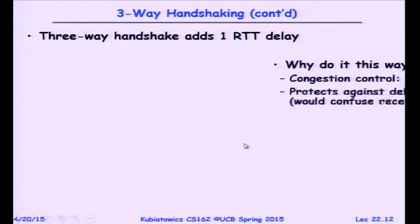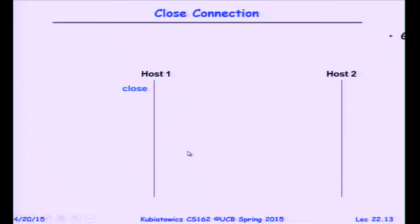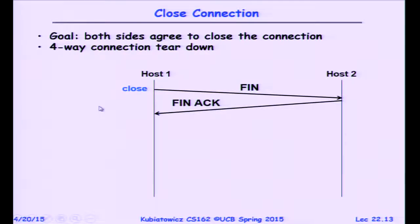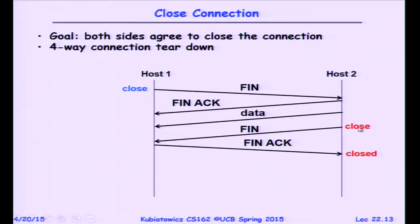The three-way handshake adds a round-trip delay, but it acts as a cheap probe and protects against delayed packets from other connections. Closing a connection uses a four-way teardown: host one sends a FIN, gets a FIN-ACK back — closing that direction. Host two may still be sending data; when it's done it sends its own FIN, which gets acknowledged, and the connection is fully closed. Even when host one has chosen to shut down, it may continue receiving data from host two until the FIN-ACK sequence completes.